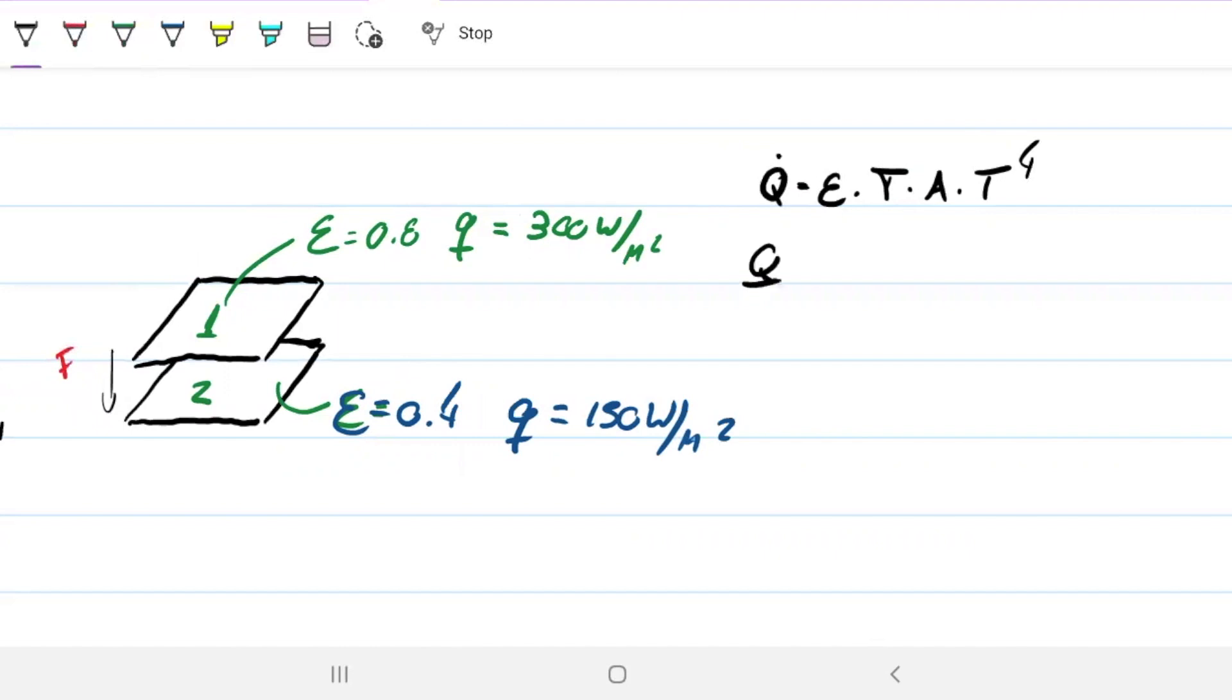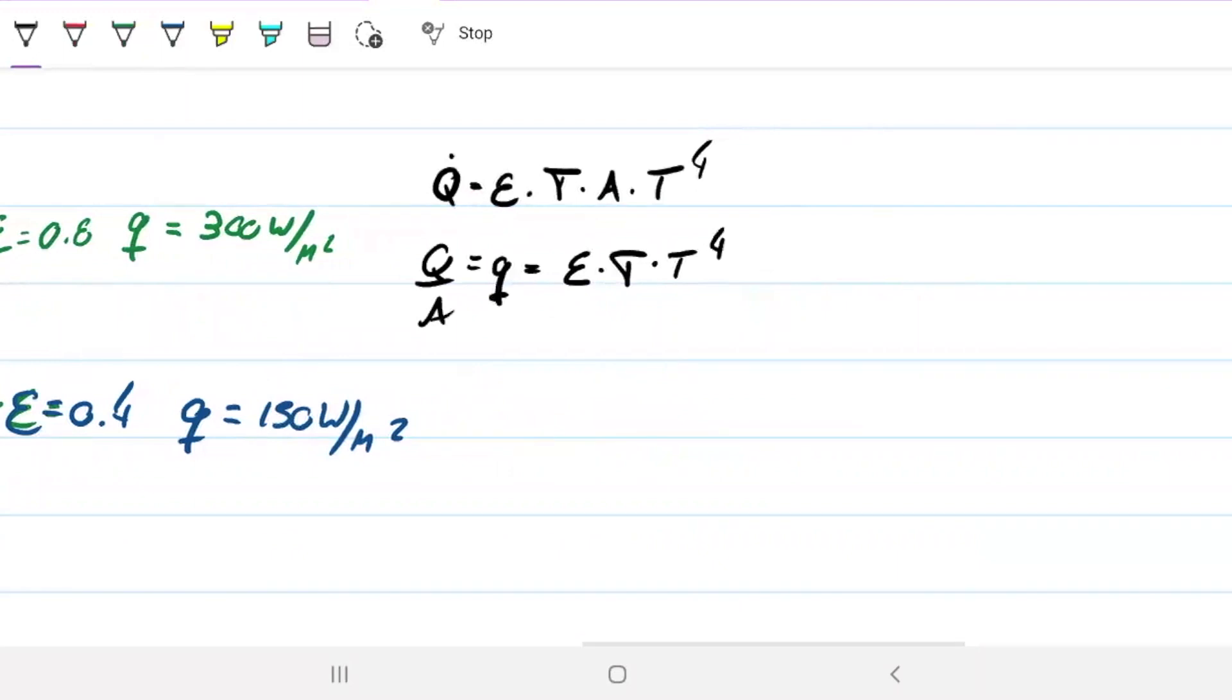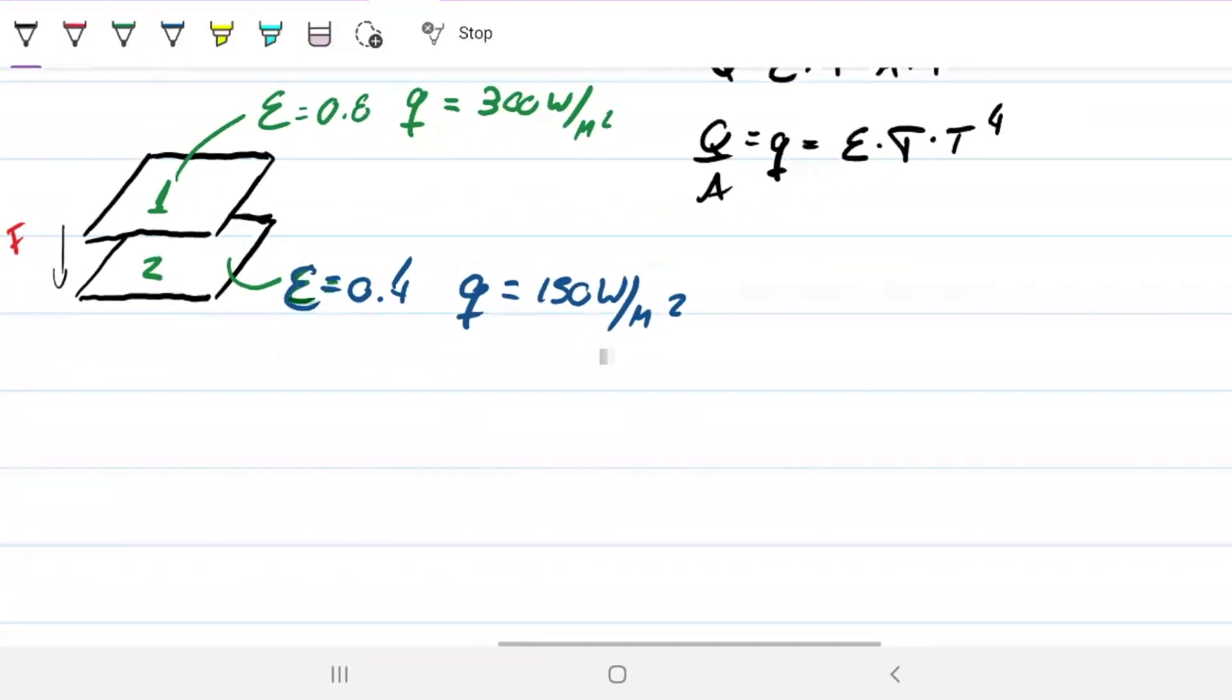Okay, so that means that Q over A, which is our small q as we know, is just the emissivity, Stefan-Boltzmann, and T to the fourth. So if I'm looking for T, let's put T down here for both of them.